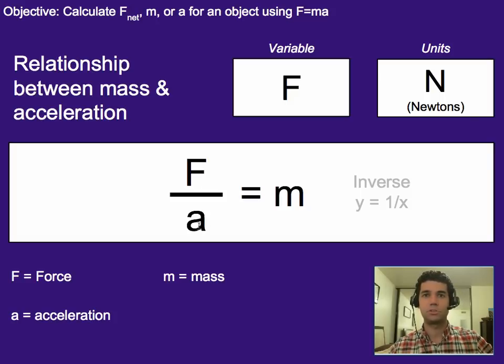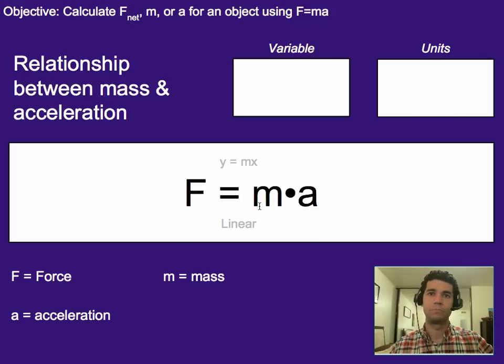And we can actually switch this around. So mass could also be down here, and acceleration could be over there. And so there's an inverse relationship between the two. And the reason why is if you hold this constant, the force, then if we increase mass, then acceleration has to go down by the same factor in order to balance out and still keep the same force, and vice versa.